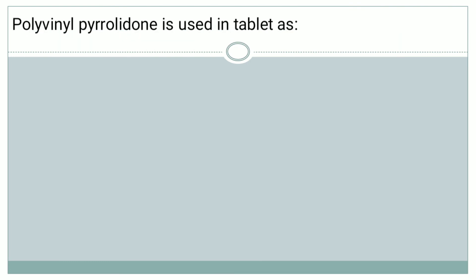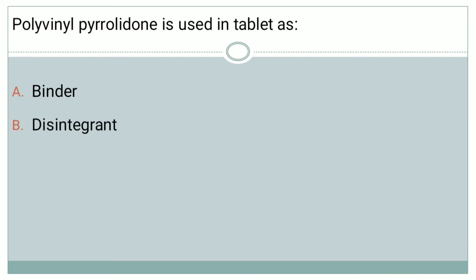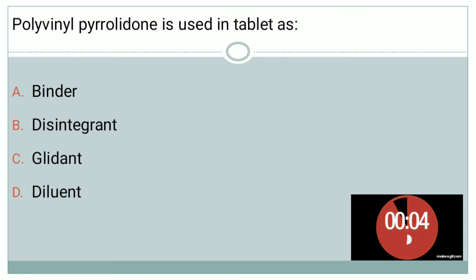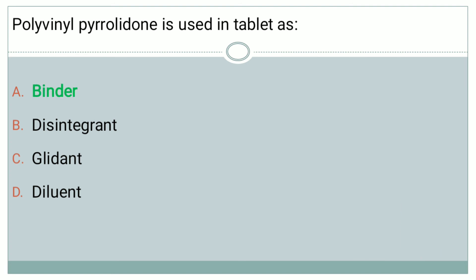The next question is: polyvinyl pyrrolidone is used in tablets as — option A: binder, option B: disintegrant, option C: glidant, and option D: diluent. The correct answer is option A — binder.